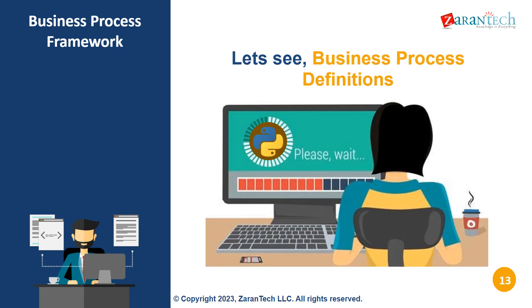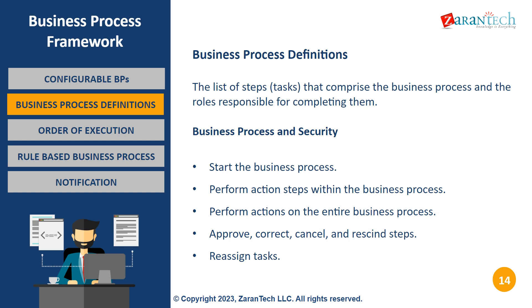Now let's look at how business process definitions work in Workday. Business process definitions consist of the list of steps or tasks that make up the process workflow. They also define the roles responsible for completing each step. Users can start processes, perform actions within a process, take actions on the whole process like approve or cancel it, reassign tasks, and correct steps. All of this is controlled by the user's security access.